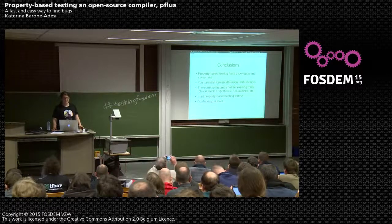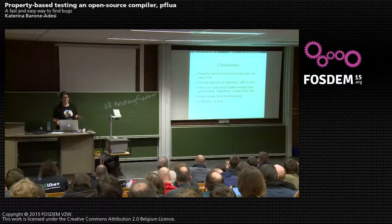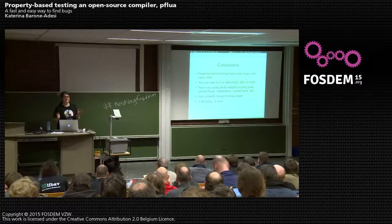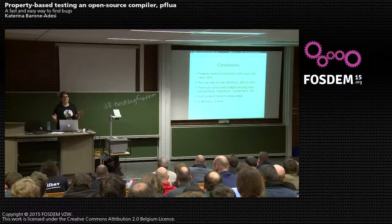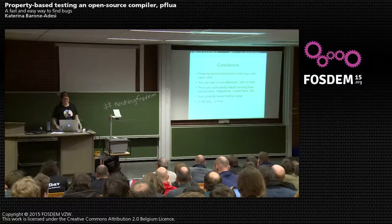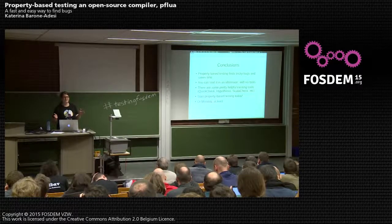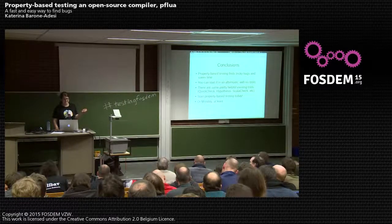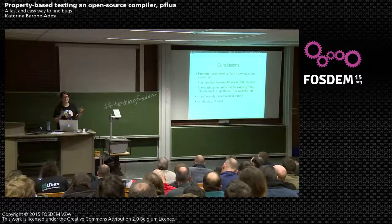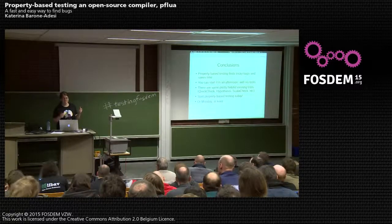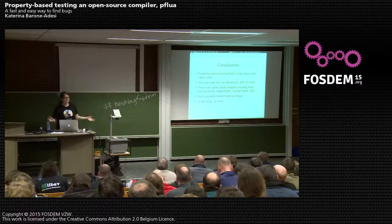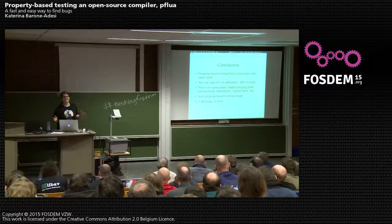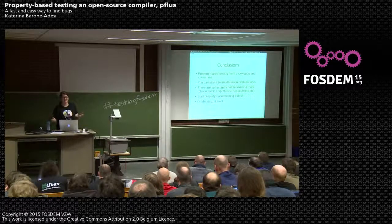In conclusion, property-based testing finds really tricky bugs and can save you a lot of time. Finding a bug early is a lot better than finding the same bug ten months later digging through a gigantic customer field report. You can start in an afternoon with no tools — probably even an hour. And if you're willing to spend a little time reading a manual, using something like QuickCheck can help you make really effective test cases quickly. I'd recommend you start property-based testing today — or since it's Sunday and we're at FOSDEM, on Monday at least.